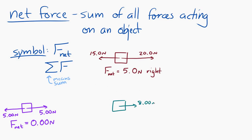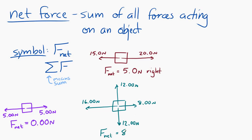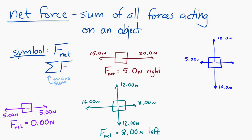If we have an object with eight newtons to the right, 16 newtons to the left, 12 newtons up, and 12 newtons down, the up and down forces cancel out and left and right give us eight newtons to the left — so the net force is eight newtons to the left. And if we have ten newtons up, ten newtons down, five newtons right, and five newtons left, the net force is zero newtons.